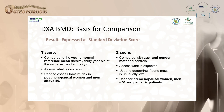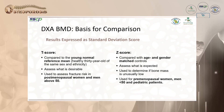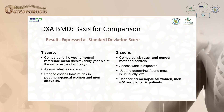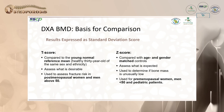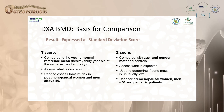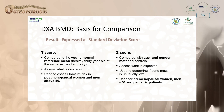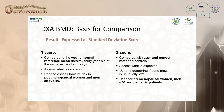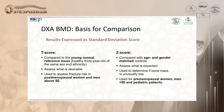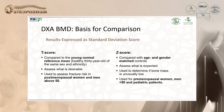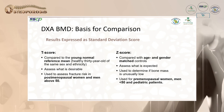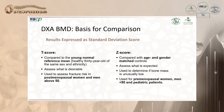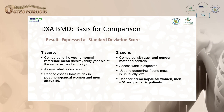The T-score is used as the basis of comparison. Results are expressed as standard deviation scores compared to the young normal reference mean — a healthy 30-year-old of the same sex and ethnicity. The T-score is used to assess fracture risk in postmenopausal women and men aged 50 and above. The Z-score compares with age- and gender-matched controls, used for premenopausal women, men under 50, and pediatric patients.